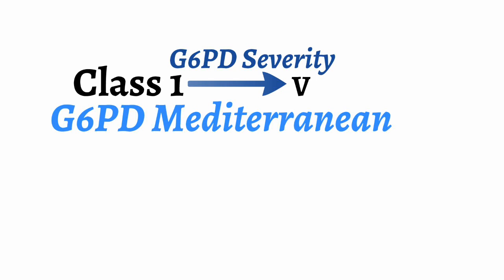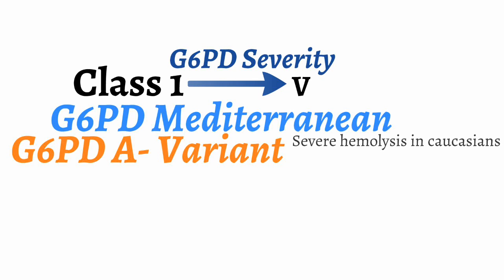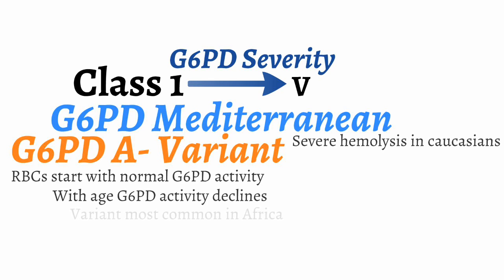Those individuals affected by G6PD deficiency vary in the degree to which they are affected. The severity of hemolysis, or RBC cell death, is categorized from class 1, the most severe, to class 5, who are asymptomatic. Even within G6PD deficiency, there are variant forms, including the Mediterranean variant, which causes severe hemolysis in Caucasians, and the A-minus variant, which is the most common form in those of African ancestry and generally not as severe. The A-minus variant produces RBCs with normal G6PD enzymatic activity as reticulocytes, but the activity declines with the age of the red blood cells.